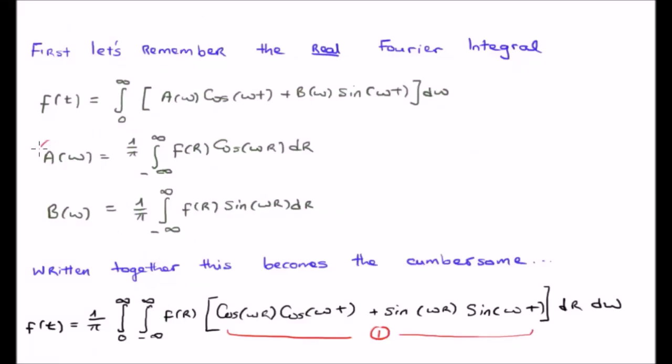If we insert the functional forms of A of omega and B of omega into f of t, we will get this particular expression at the bottom of your screen. It's important that we look and evaluate or examine each of the terms.